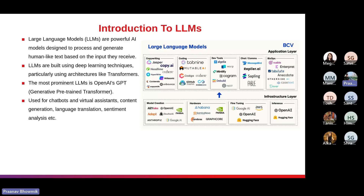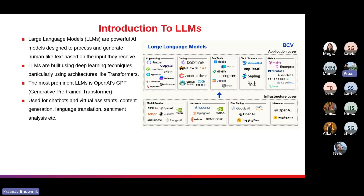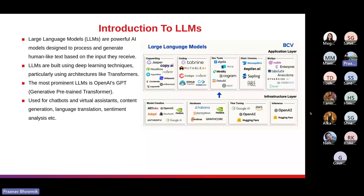One of the most famous LLMs is GPT-3, which has been trained on around 175 billion parameters and demonstrated remarkable capabilities. It can perform tasks including text generation, translation, question answering, summarization, and even coding. LLMs have numerous applications across various fields: chatbots, virtual assistants, content generation, language translation, sentiment analysis, and code generation. LLMs also have the potential to assist with complex language-based tasks, automate repetitive processes, and provide useful insights from textual data.